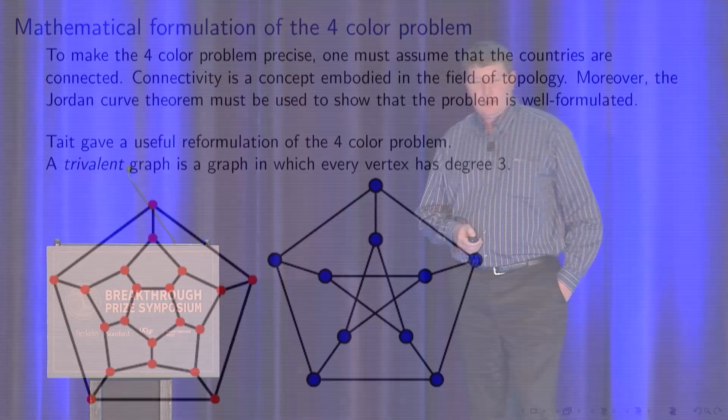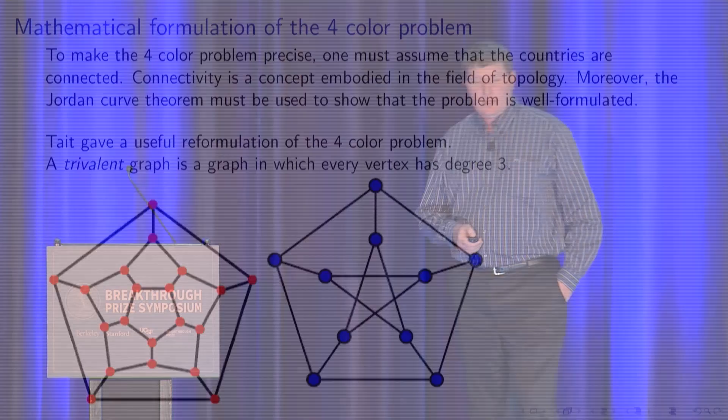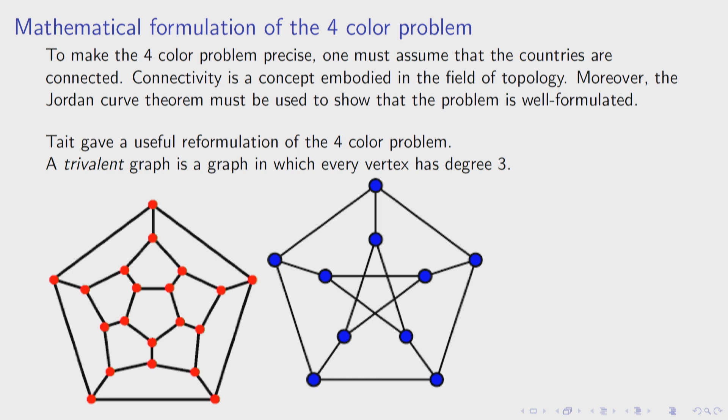By any intents and purposes, this is as good and reliable a theorem as we might have in mathematics. I wanted to say a little more about how to make a precise mathematical formulation of the four-color problem. To make it precise, you should assume that countries or counties are connected. Connectivity is actually a subtle concept embodied in the field of topology. Topology is the discussion of connectivity — looking at geometric spaces but allowing them to deform without cutting or gluing.